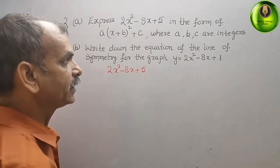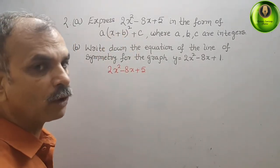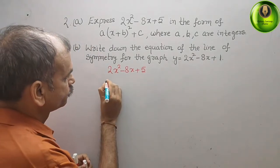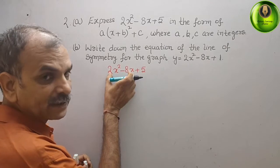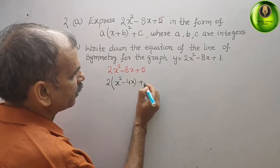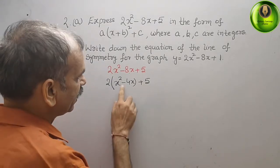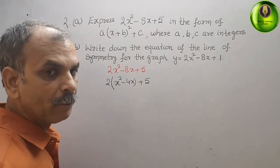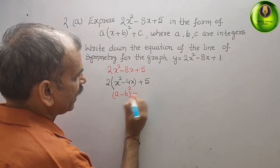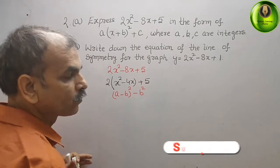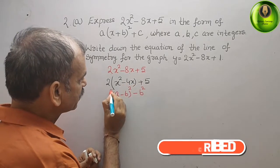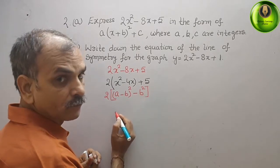We have to express it in this form, which means we have to use the completing the square method. You can see that 2 is common, so among the first and second terms what is left is x² minus 4x plus 5. Here there is a minus sign, so we will make it a minus b whole square minus b². This 2 will come out as a factor, plus 5.